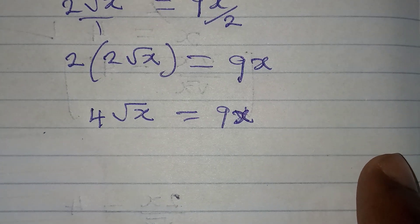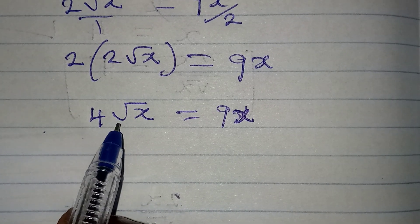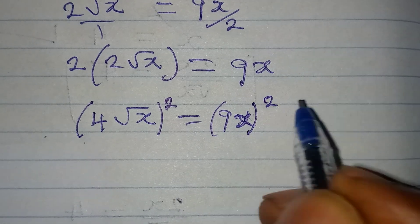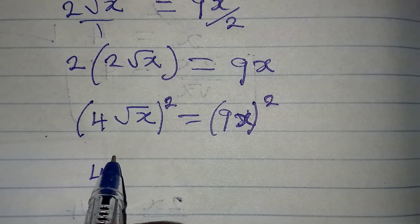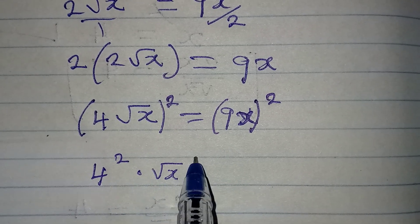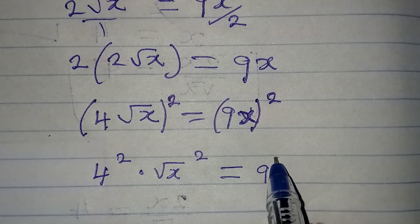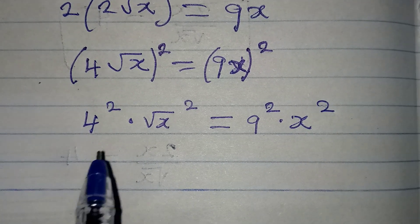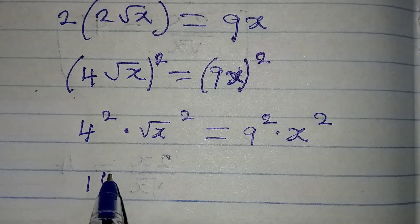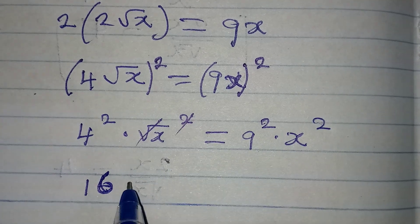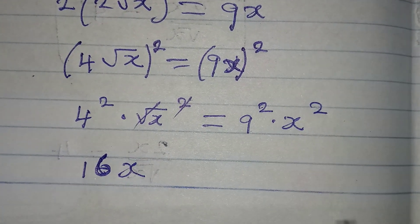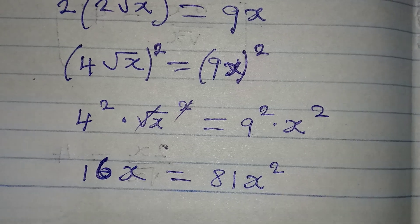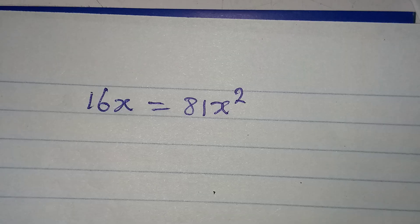Now I need to remove this square root. I will do that by squaring both sides. This is the same as 4 squared multiplied by square root of x squared, equal to 9 squared multiplied by x squared. Now 16 is here because 4 squared is 16, and the square and square root cancel, so we have 16x on the left hand side equal to 81 times x squared.